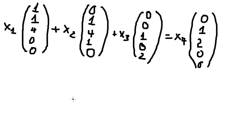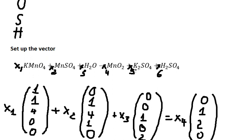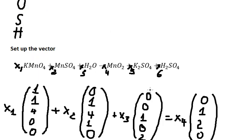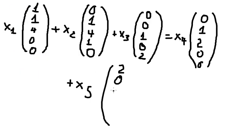The next one is S5. In this one we have 2K, zero Mn, four oxygen, one H, and zero hydrogen.